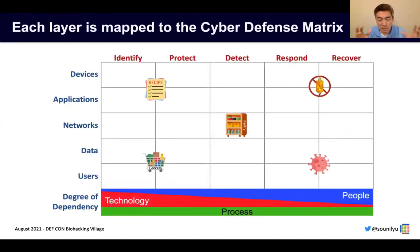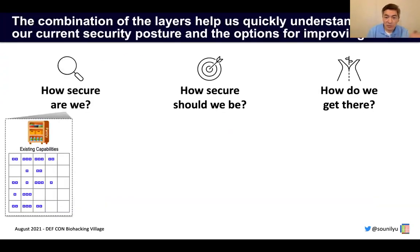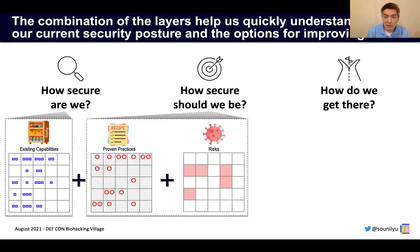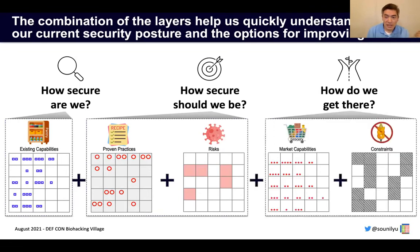What we're going to do is map each of these different layers to the Cyber Defense Matrix. In doing so, we should be able to answer these three questions: How secure are we? — we look at our existing capabilities. How secure should we be? — we look at proven practices plus the risks we have to address. And how do we get there? — we look at what's available in the market while being mindful of the constraints we have to deal with.